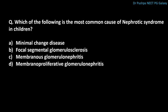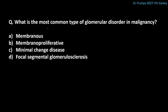What is the most common cause of nephrotic syndrome in children? The correct answer is minimal change disease, also known as lipoid nephrosis or nil disease. This is cytokine-mediated podocyte damage. What is the most common type of glomerular disease in malignancy? The correct answer is membranoproliferative glomerular disease. In SLE, the most common glomerular disorder is diffuse glomerulonephritis. Membranoproliferative is also most common in leprosy.